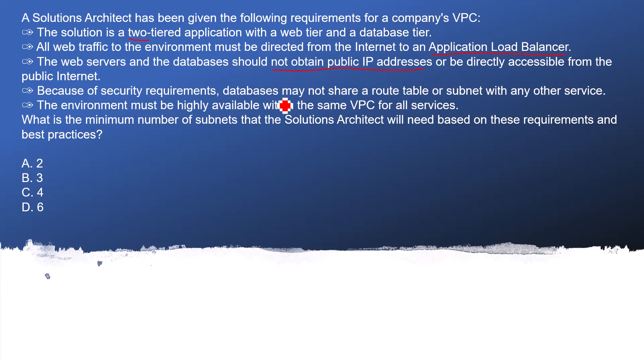Because of a security requirement, the database may not share a route table or subnet with any other services. The environment must be highly available within the same VPC - so it is asking for an HA-based design. What is the minimum number of subnets that the solution will need based on these requirements? Let's visualize the question with a diagrammatic view.